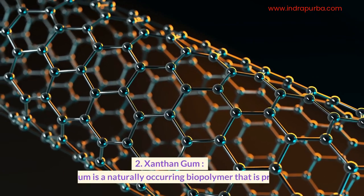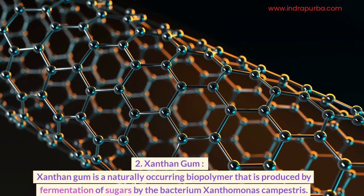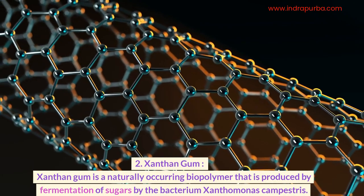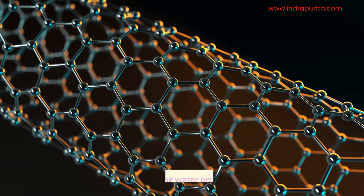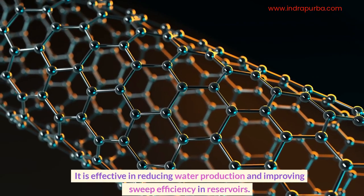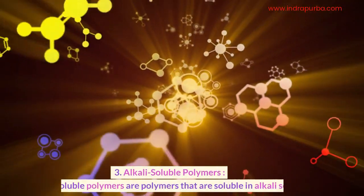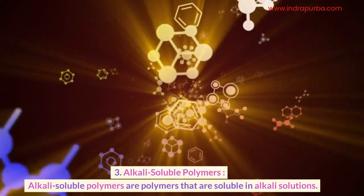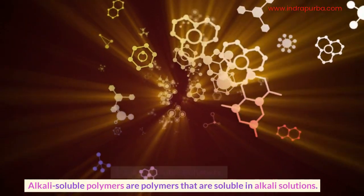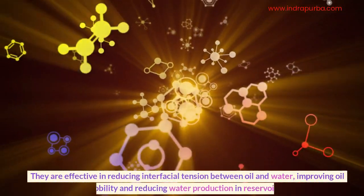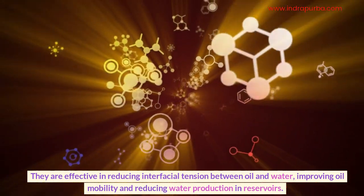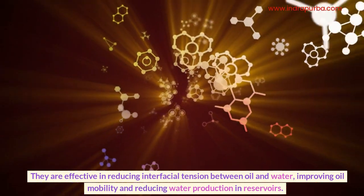2. Xanthan gum is a naturally occurring biopolymer produced by fermentation of sugars by the bacterium Xanthomonas campestris. It is effective in reducing water production and improving sweep efficiency in reservoirs. 3. Alkali-soluble polymers are polymers that are soluble in alkali solutions. They are effective in reducing interfacial tension between oil and water, improving oil mobility and reducing water production in reservoirs.